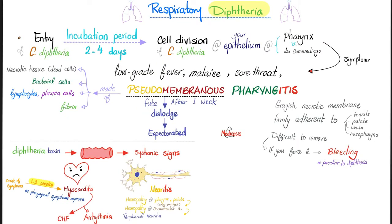Respiratory diphtheria: the bacteria enters the respiratory tract and after a two-to-four day incubation period, symptoms begin. The bacteria divides in the epithelium of the pharynx and surrounding soft tissue, producing low-grade fever, malaise, sore throat, and the infamous pseudomembrane on the pharynx — covering the uvula, palate, and tonsils. The membrane is grayish, thick, and very difficult to remove; forcing it will cause bleeding. This is unique to diphtheria.